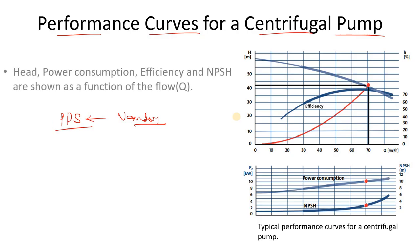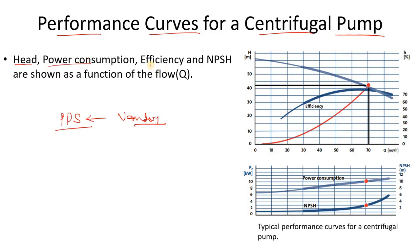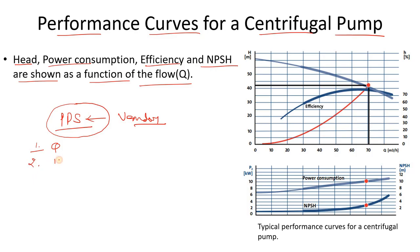One very important thing to note is that head, power consumption, efficiency, and net positive suction head (NPSH) are all shown as a function of flow rate. So as a process engineer preparing the process data sheet, when you want to buy a pump, the first required information is flow rate, then differential head, and then NPSH. These three pieces of information are very important, but flow rate is especially critical.